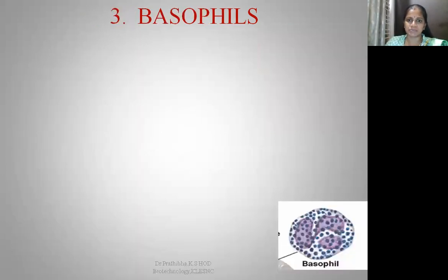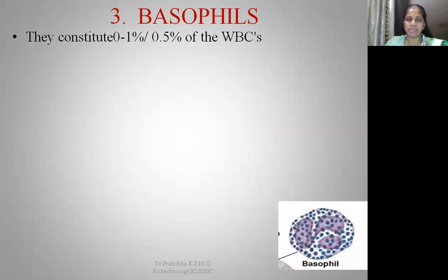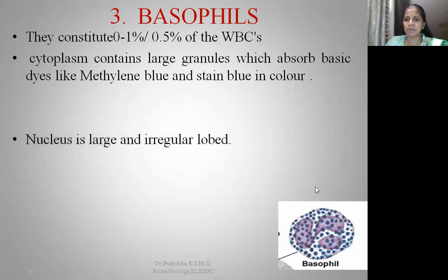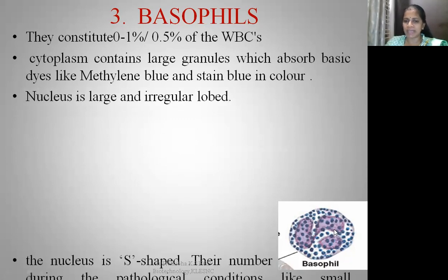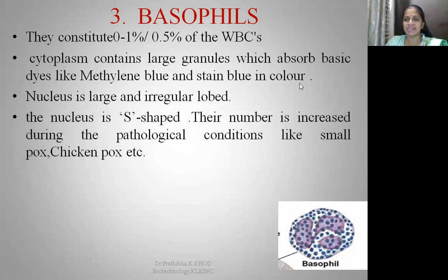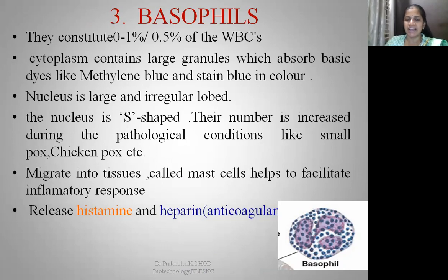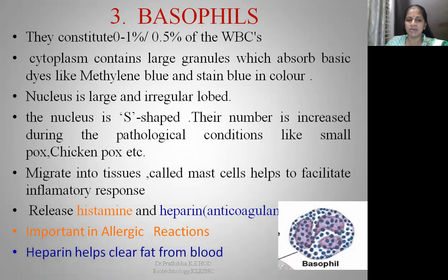Basophils constitute 0.5 to 1 percent of total WBCs. Their cytoplasm contains large granules which absorb basic dyes like methylene blue and stain blue in color. The nucleus is large and irregular, quite S-shaped. Their number increases during pathological conditions like smallpox and chickenpox. Basophils migrate into tissues to become mast cells, helping to facilitate inflammatory response. They release histamine and heparin — heparin plays an important role in anticoagulation, preventing coagulation of the blood, and also helps to clear fat from the blood.